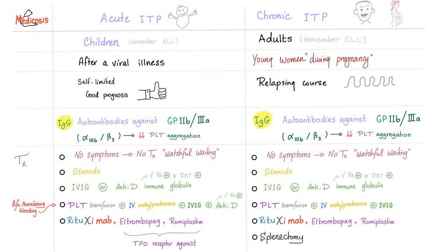Let's compare acute ITP versus chronic ITP. Acute ITP usually happens in children; chronic ITP usually happens in adults — similar to how ALL occurs in children and CLL in adults. Acute ITP usually occurs after a viral illness, while chronic ITP is typically in a young woman, often diagnosed during pregnancy because extensive blood testing is done at that time. ITP is a very common cause — if not the most common cause — of thrombocytopenia during pregnancy. Acute ITP in children is usually self-limited with good prognosis; chronic ITP is relapsing, coming and going, sometimes mild, sometimes severe, sometimes asymptomatic.